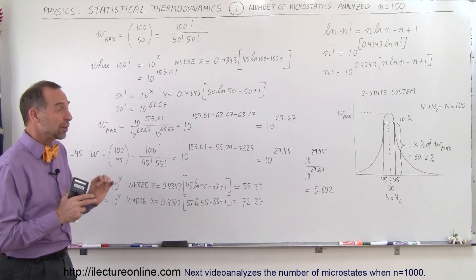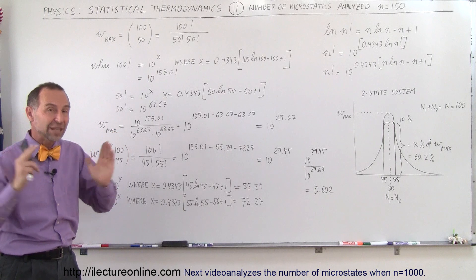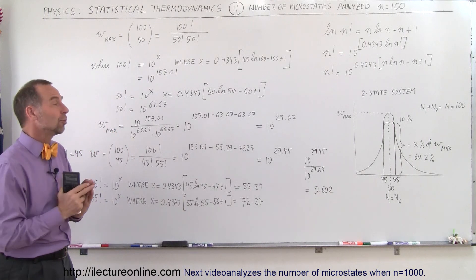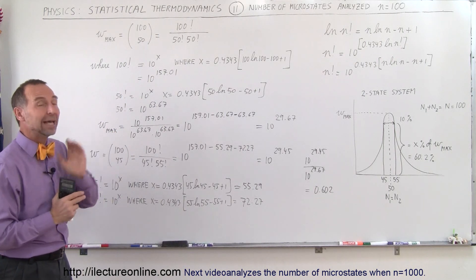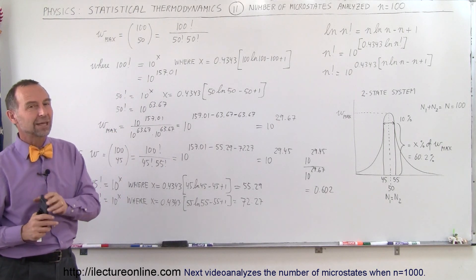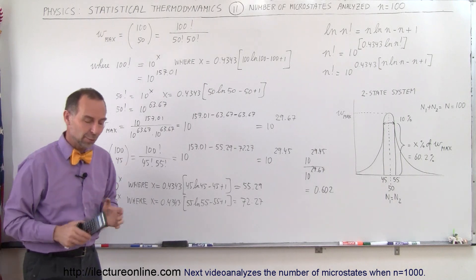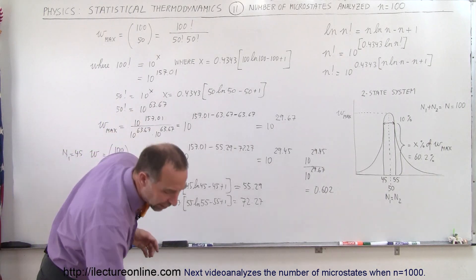To get rid of that uncertainty in Stirling's approximation, let's try one now where n equals 1,000. That way we'll get a very good feel for how narrow that distribution will become when n equals 1,000.